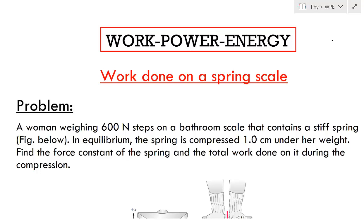Hello friends. In this video we will see how to calculate work done on a spring scale. You may remember the work done on a spring is given as half k x2 squared minus half k x1 squared. In this case k is the spring constant, x2 is the final spring length and x1 is the initial spring length. Let us illustrate all this using an example.